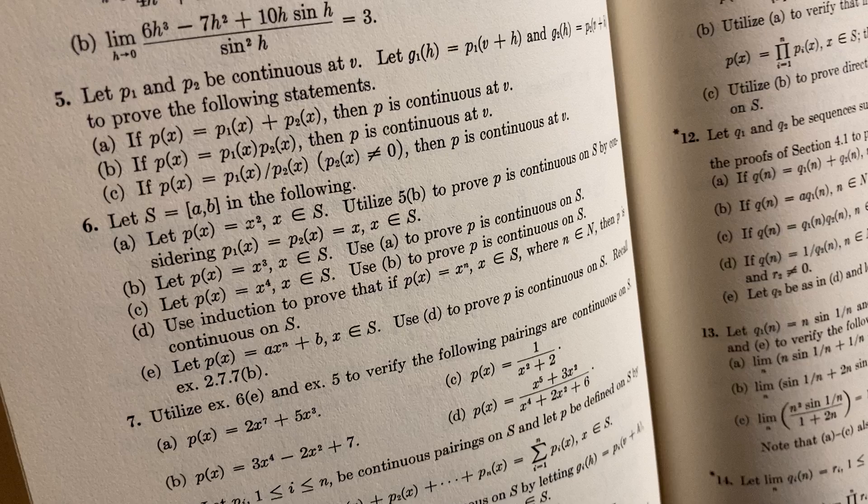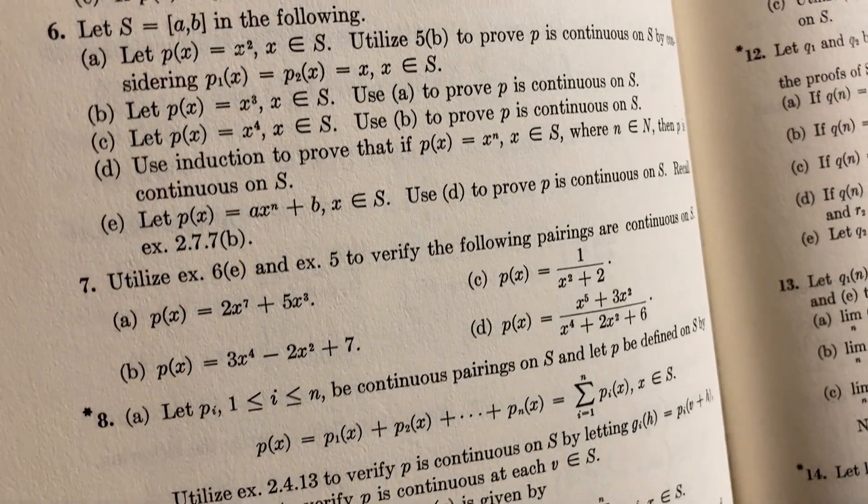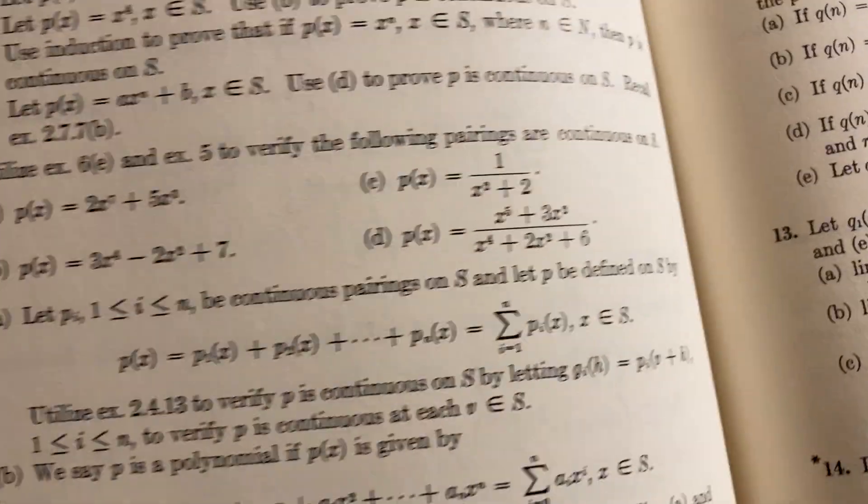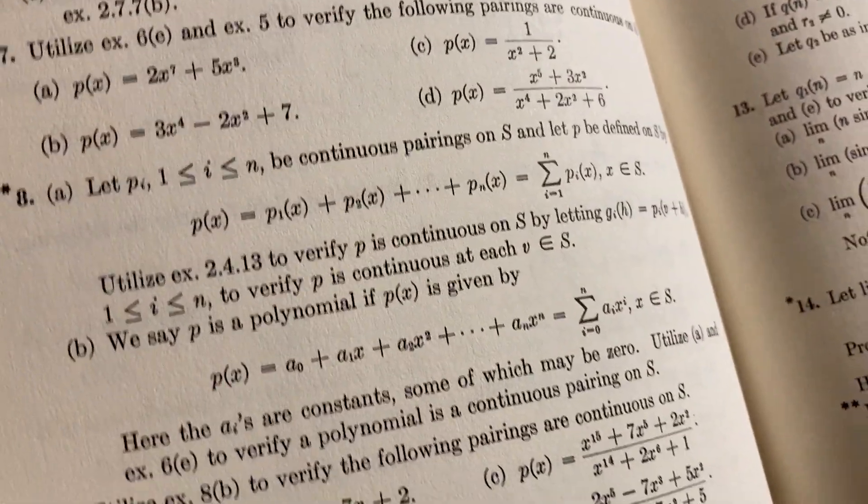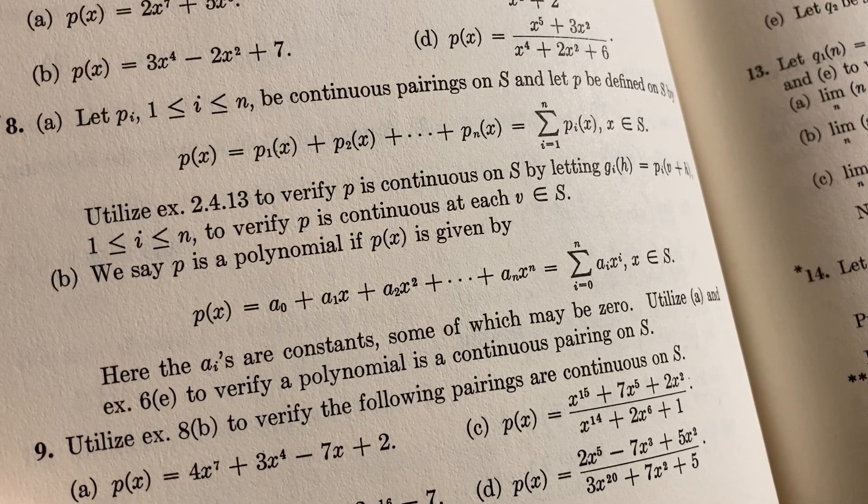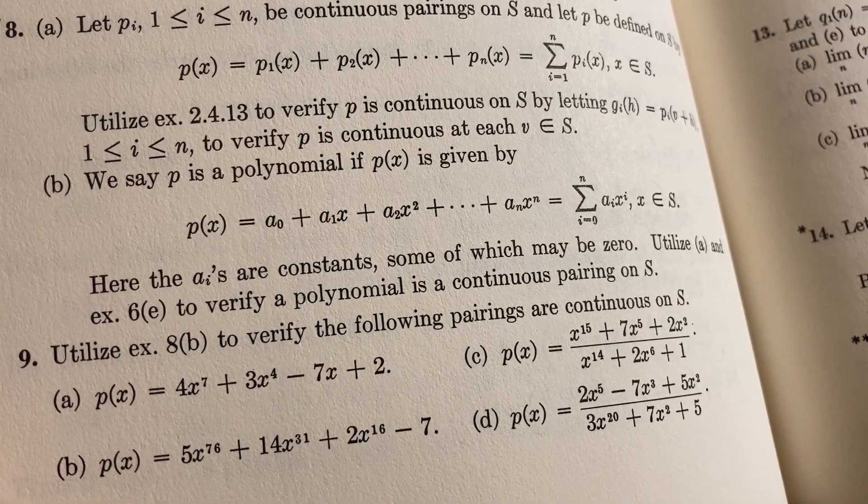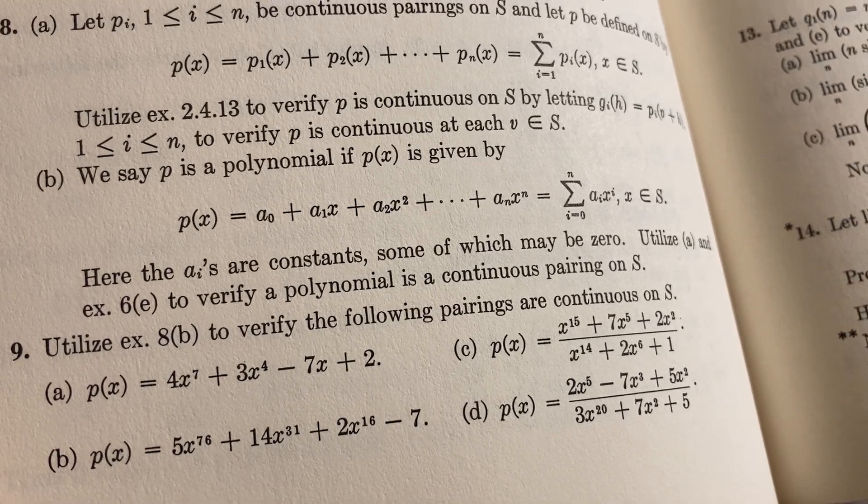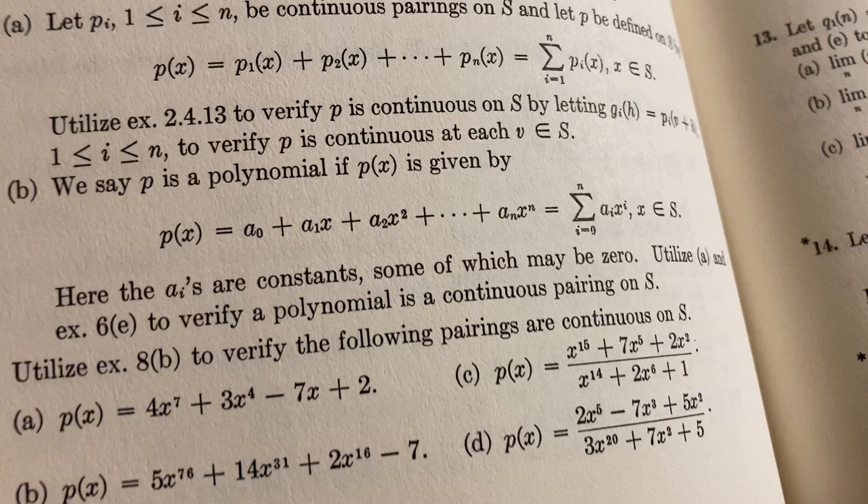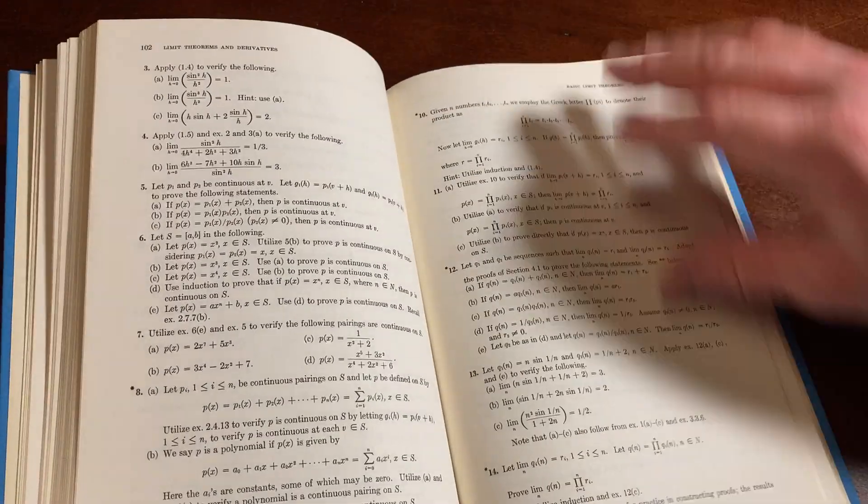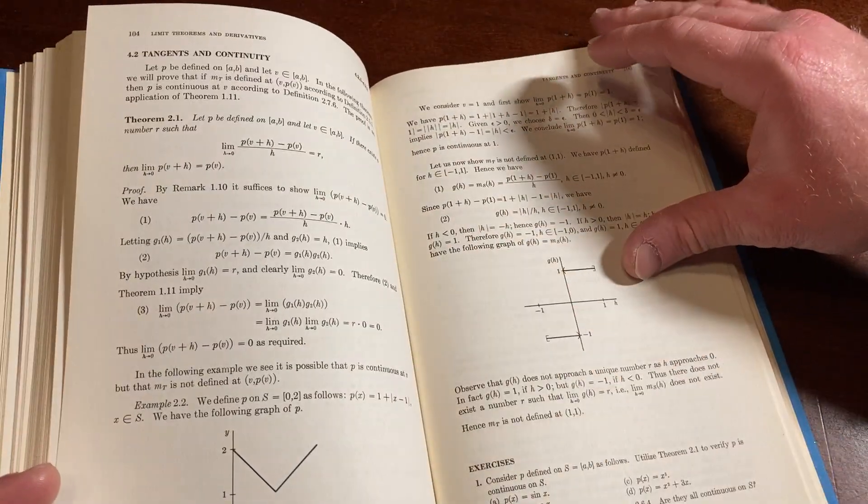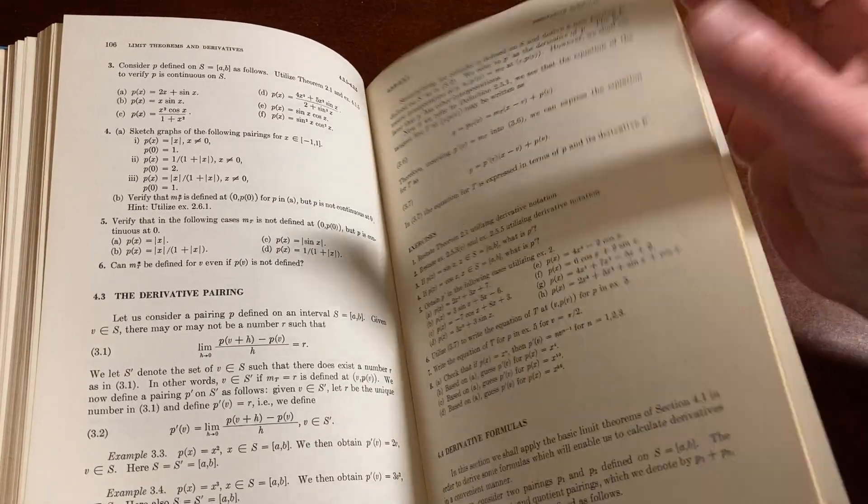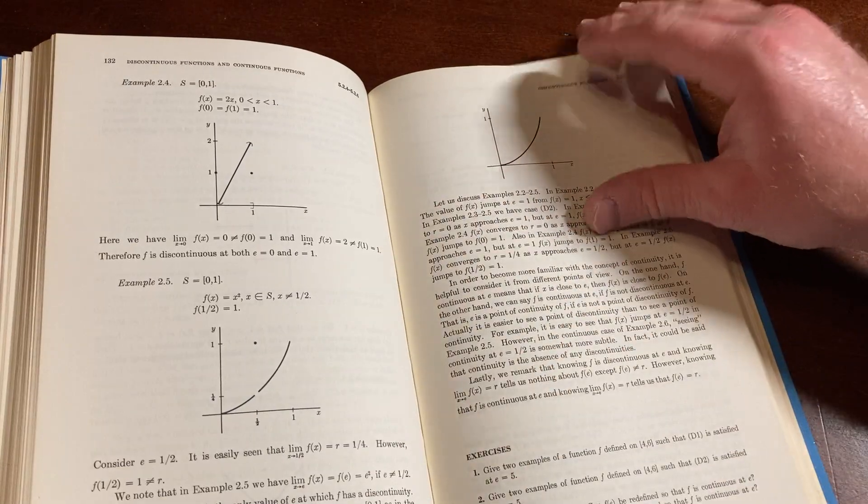Let's go to the harder ones. Let's see. Utilize something and something. Verify the following pairings are continuous on S. We see P is a polynomial. Okay. Utilize example 8B to verify the following pairings are continuous on S. So they want you to use some other examples to verify these things are continuous. So just a lot of conceptual stuff there. Nothing really – it's a little bit delicate. You have to think, right? You have to think.